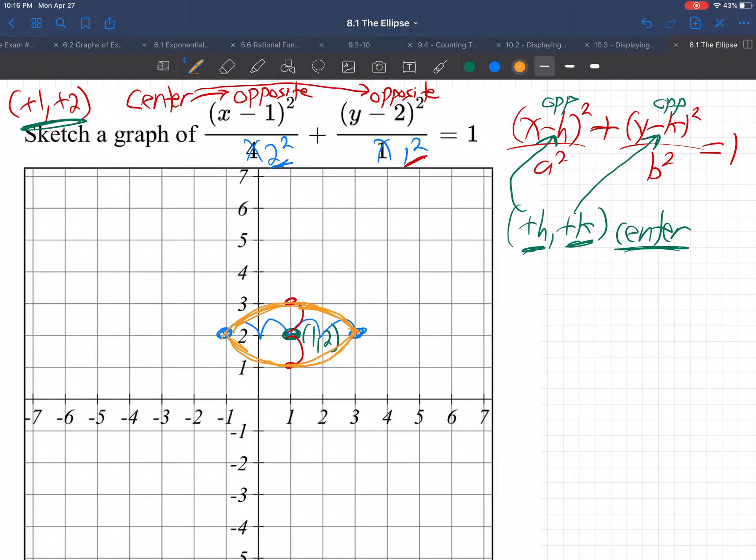So again, we start with the center, which is the opposite of what's next to x and y. So right 1, up 2, and then from that center, whatever's underneath x as a square, 2 squared, go right and left 2. Whatever's underneath y as a square, 1 squared, up and down 1. And that gets you the shape.